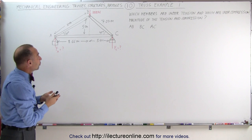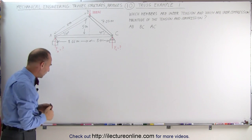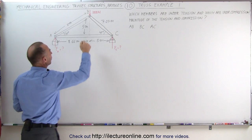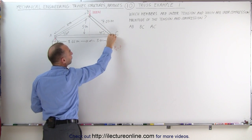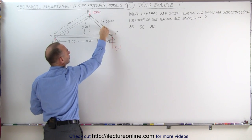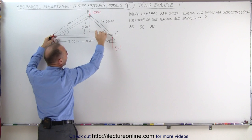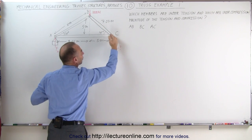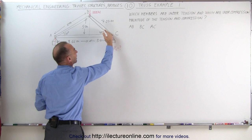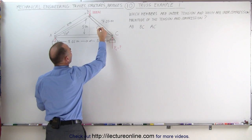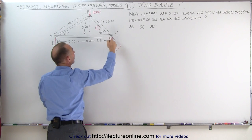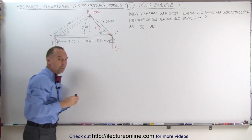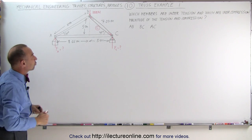The next thing we want to do is determine which members are under compression and which are under tension. One way to do that is to imagine this: with a 1,000-newton force acting on the truss, if this member were not joined to the other member, it would rotate down, and the other member would slide out. So the connection is pushing back, preventing it from sliding — which means this member must be under compression. When a member is under compression, it pushes outward against both joints where it's connected.